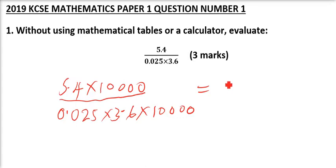So when you multiply 5.4 by 10,000 you will be able to get 54,000. You divide by, this now you have 25, there will be whole numbers and we have 3.6. So that will remove all the decimals. So you simplify.